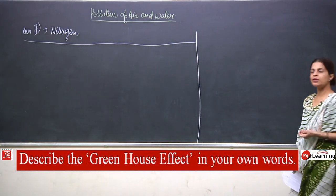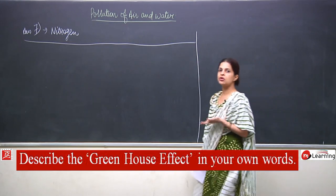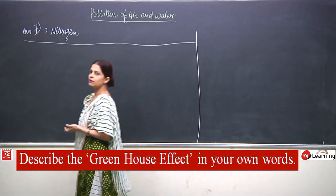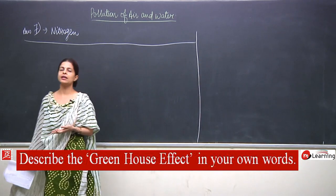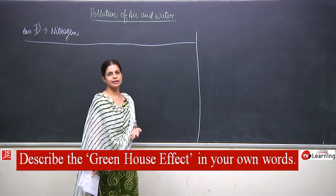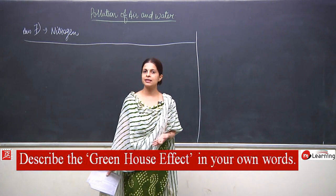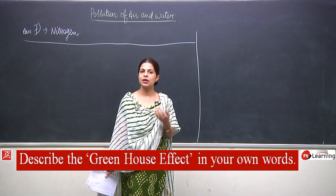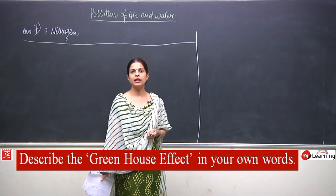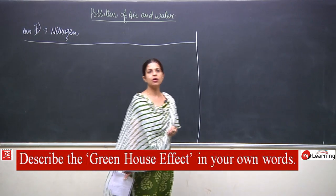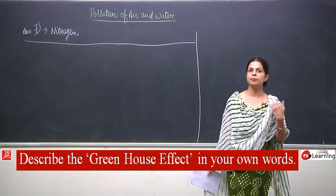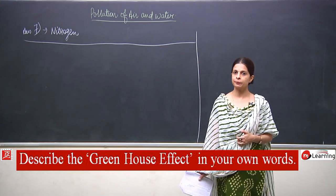What is the meaning of global warming? It is the rise of the temperature of the earth, and it happens due to greenhouse gases. These gases trap the sun's heat and do not allow it to escape from the atmosphere.